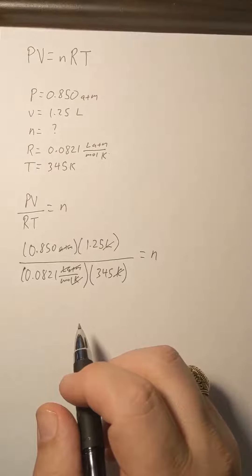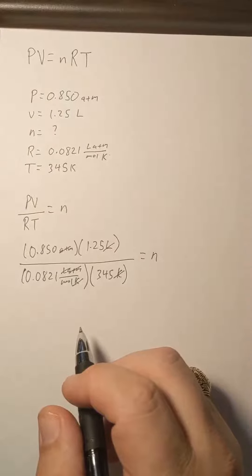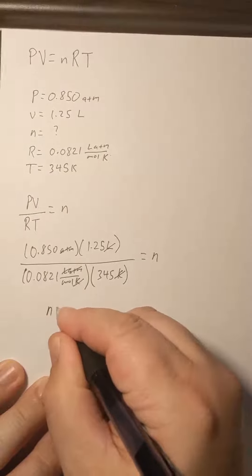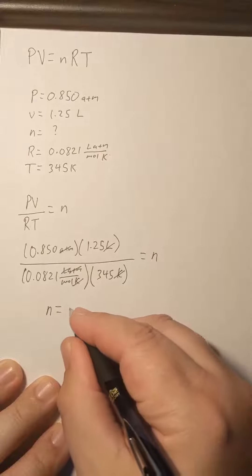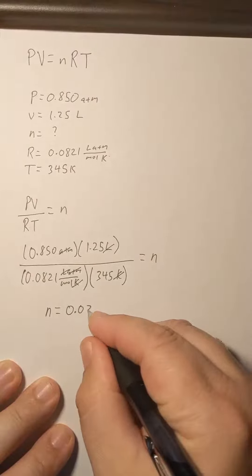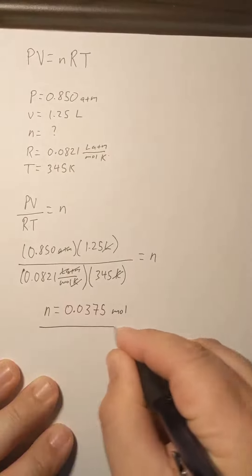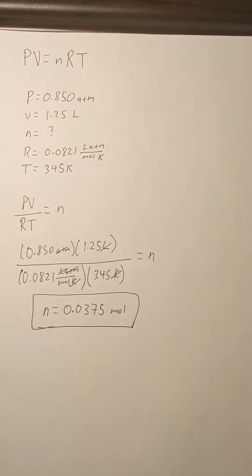So now we'll just plug everything into our calculator: 0.850 times 1.25 over 0.0821 times 345. N will equal 0.0375 moles. This is how many moles of gas we have inside of our sample container.